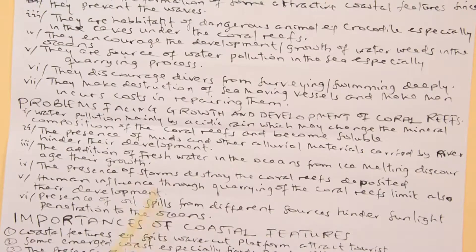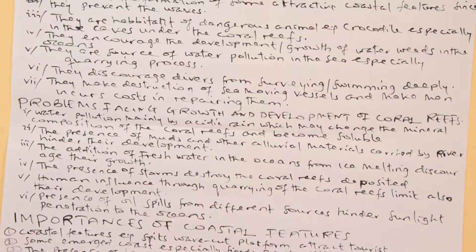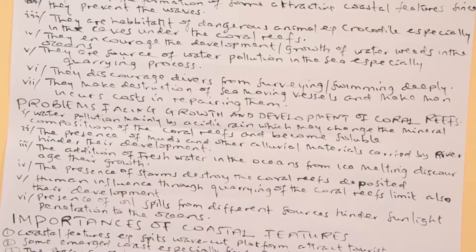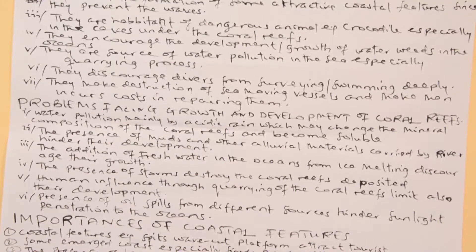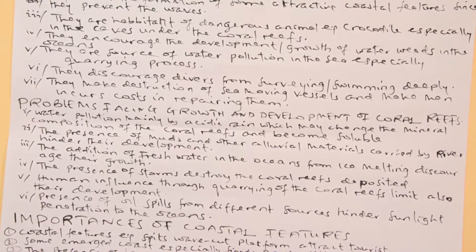Another problem is the presence of storms, which destroy coral reefs. As described by great thinkers like Murray, before there was deposition of material at certain places, but because of strong winds, destruction occurred in that area and caused the change from fringing reef to atoll. Therefore, strong winds are among the factors which can prevent coral reefs from reaching maturity.